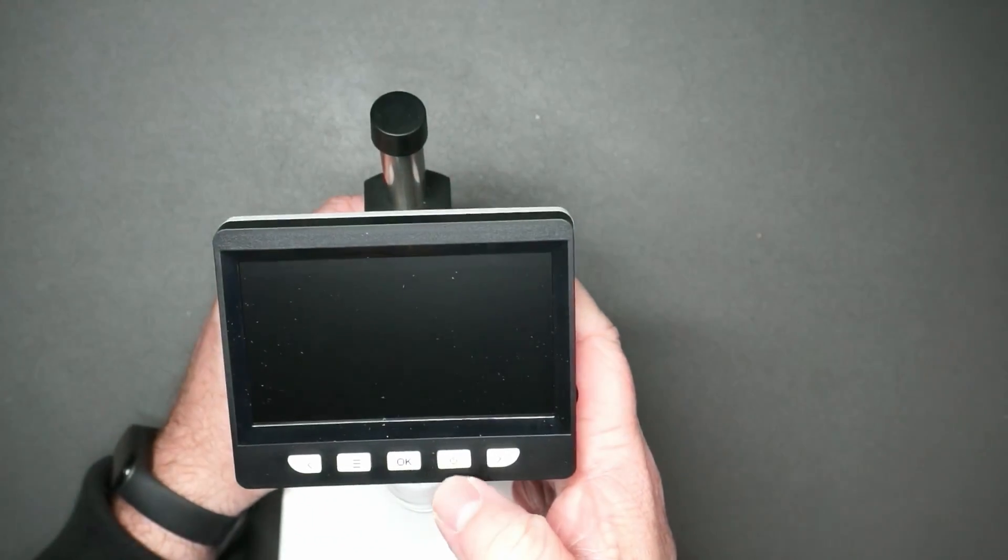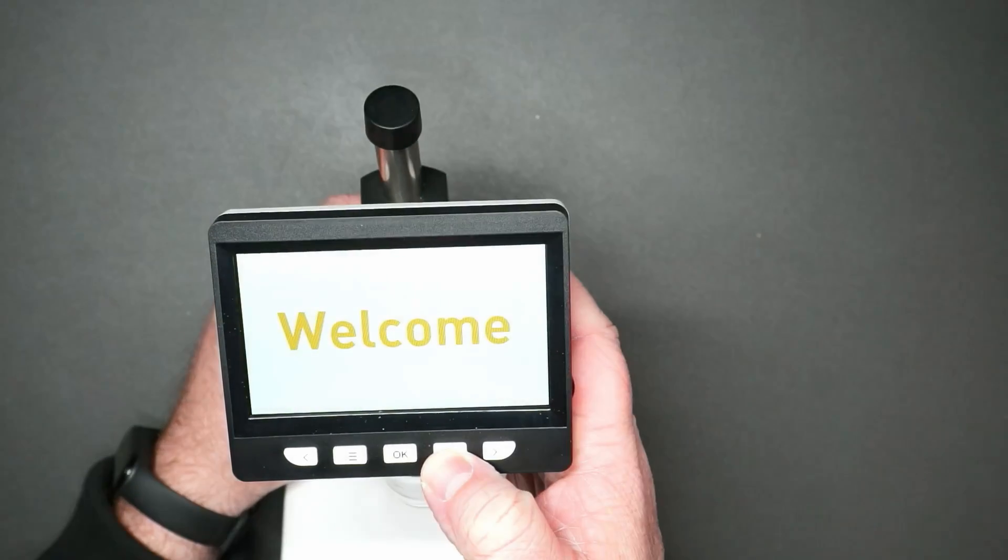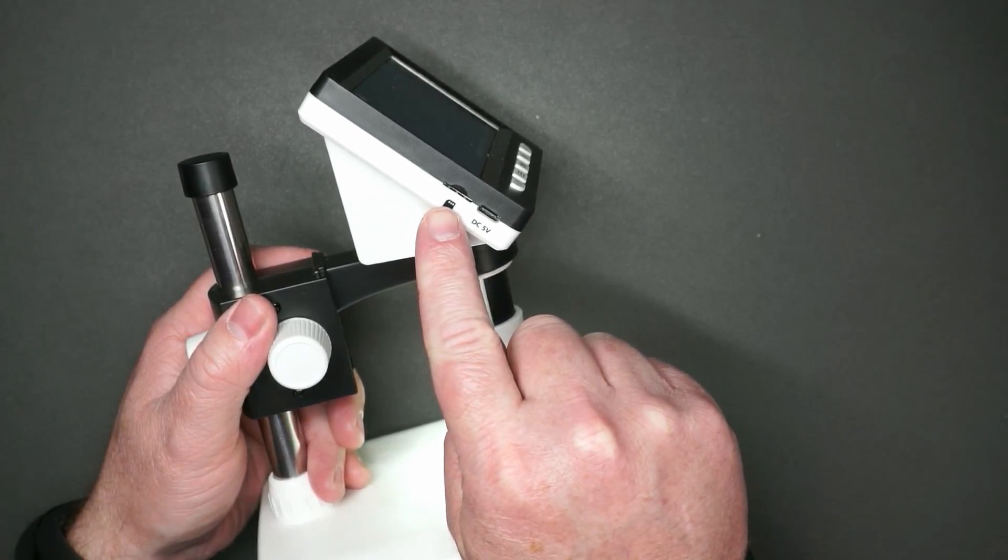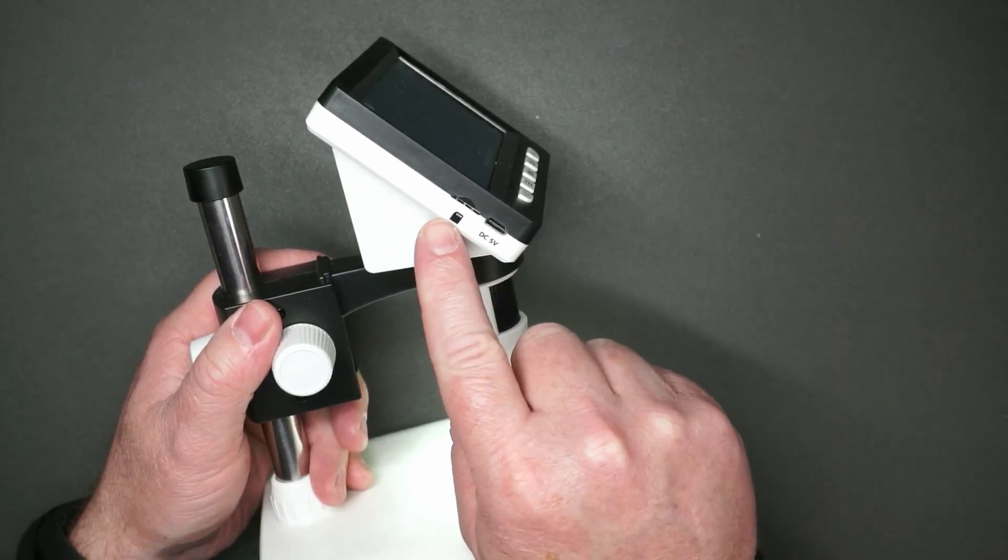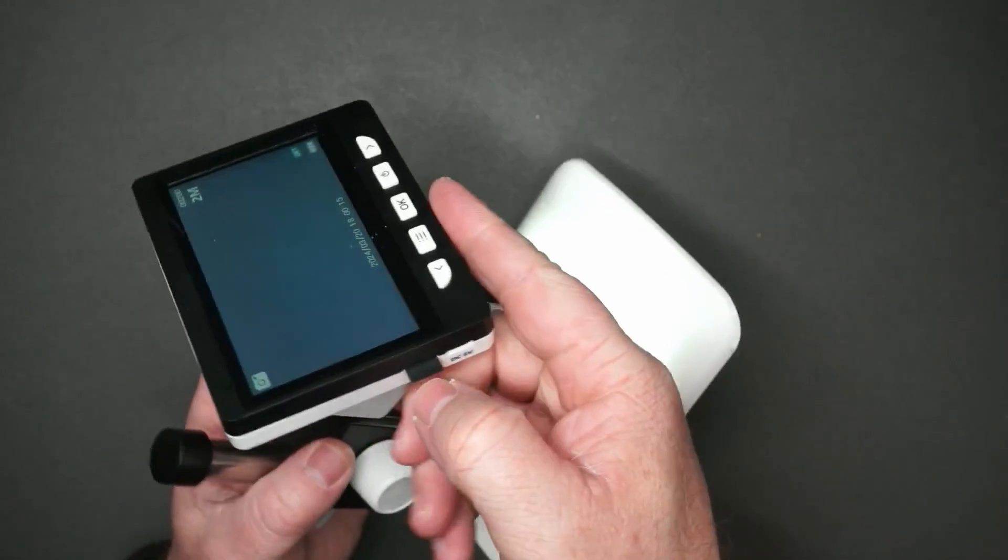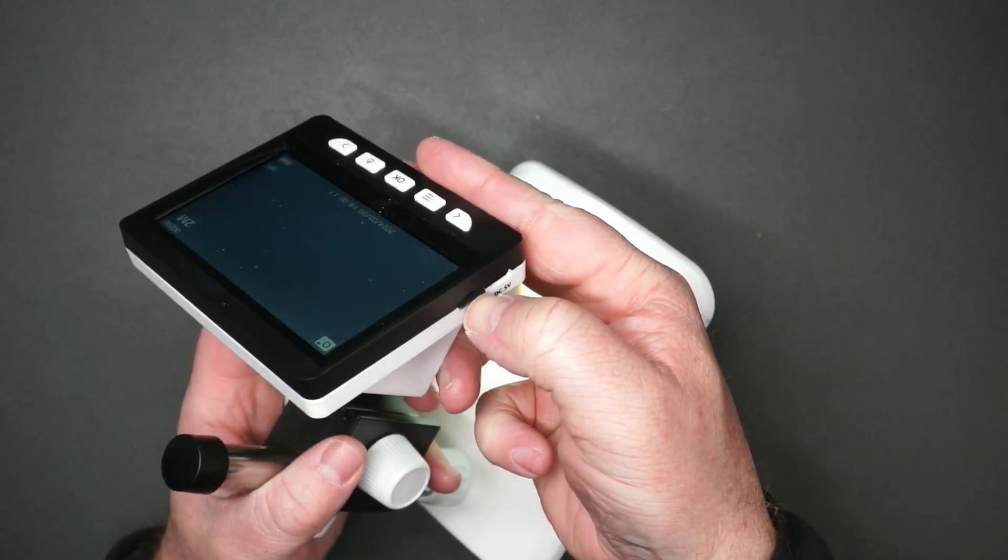Turn it on, you just press and hold the power button. You charge it via USB-C, on the side here is a slot for a micro SD card. Let's go ahead and put that in. Now I'm not sure if the format of the SD card matters but I formatted this as exFAT by default.